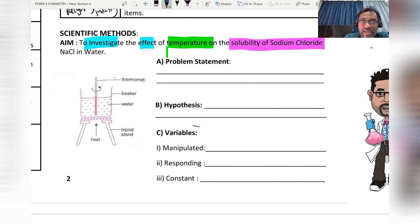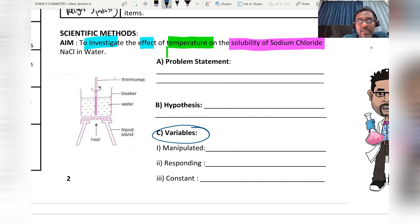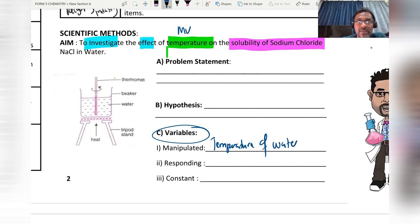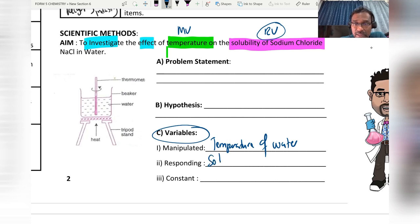To find the variables, I read the aim: 'To investigate the effects of temperature on the solubility of sodium chloride in water.' The factor that is changed purposely — the manipulated variable — will be the temperature of water. The responding variable — something we can observe — is the solubility of sodium chloride in water.